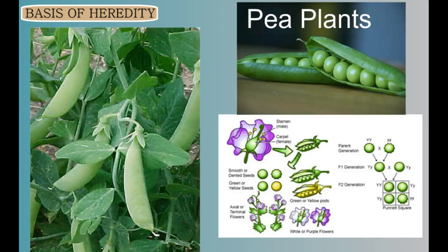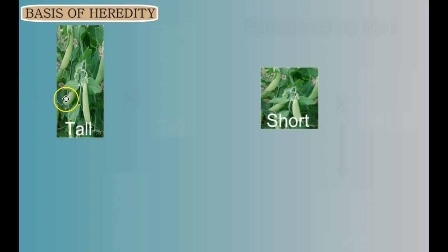Mendel was studying pea plants that produce flowers with both male and female reproductive structures, so self-fertilization is possible. Mendel was able to cross-pollinate specific plants and observe the traits of the resulting offspring and compare them to the traits of the parents. Mendel observed that he had a field of plants where the peas grew tall and another plot where the pea plants grew short.